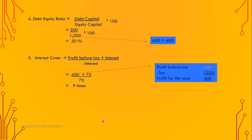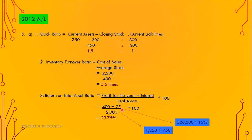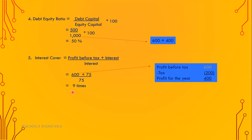Number four: debt equity ratio equals debt capital divided by equity capital into 100. Debt capital is the debenture value of 500. Equity capital is ordinary stated capital of 600 plus retained earnings. Multiplied by 100, the answer is 50%. Number five: interest cover ratio equals profit before tax plus interest divided by interest. Profit for the year 400 plus income tax 200 gives profit before tax of 600. That's 600 plus 75, divided by 75. The answer is 9 times.